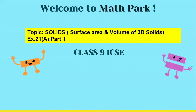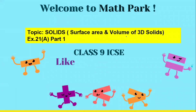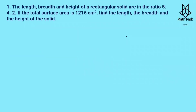Hello children, welcome to Math Park. We start with the new topic Chapter 21: Solids, where we are going to solve problems on surface area and volume of 3D shapes. This is from Class 9, from the book Concise Selena Class 9 ICSE. We'll be solving in two parts. If you like it, please share with your friends and if you are new to the channel, please subscribe.